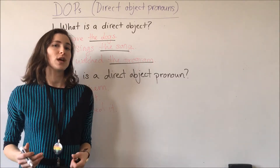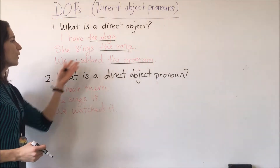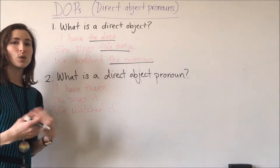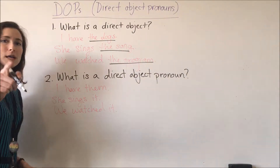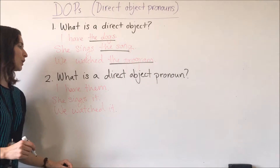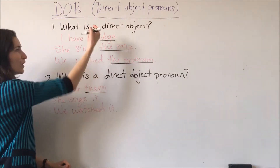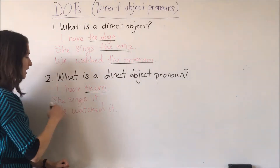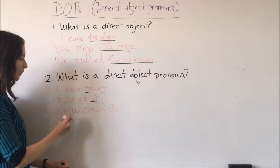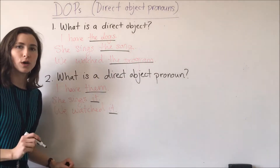A person can also be a direct object. We watched Johnny. We watched him. Him — that is a direct object pronoun. I have them, them referring to the dogs. She sings it, it referring to the song. Or we watched it, it referring to the program.